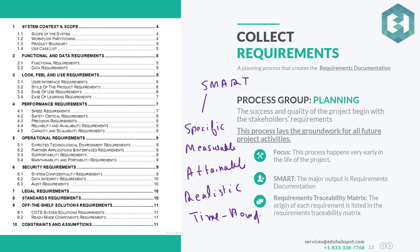All requirements should always be SMART, and most of the time requirements are SHALL or MUST statements. Like: 'the product must do this,' 'the car must have heated seats,' 'the car must have leather interiors,' 'my customized car shall have 22-inch tires' — all of those are very specific requirements.